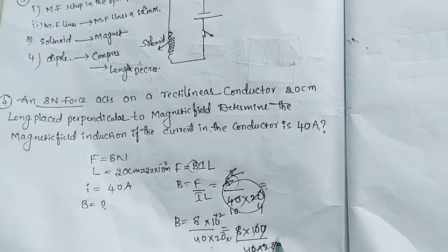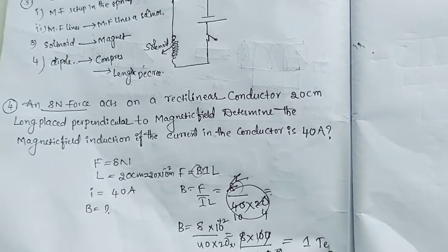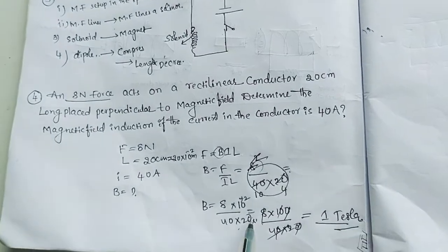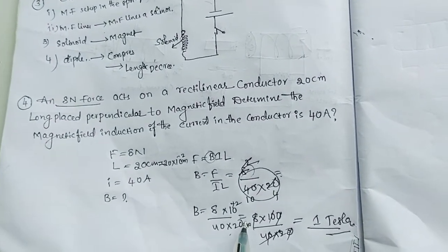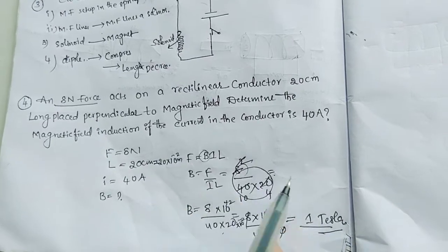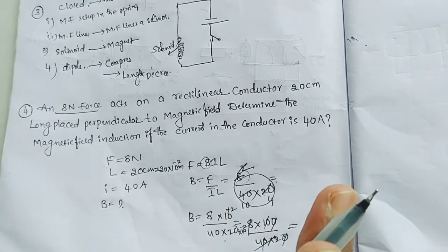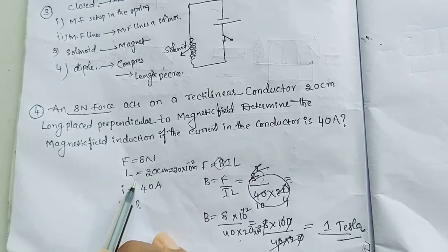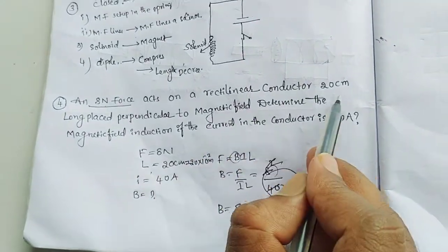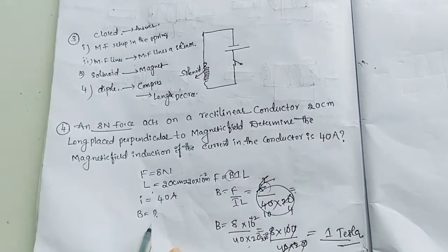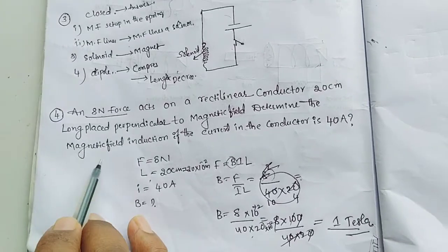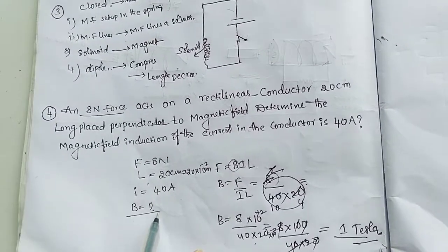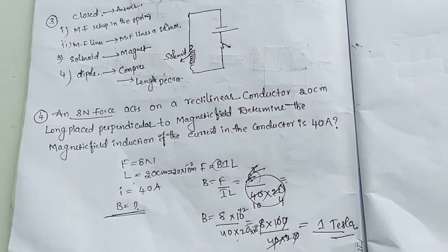So B is equal to 8 into 100, divided by 40 into 20, which simplifies to 1 Tesla. In summary: when force, length of the rectilinear conductor, and current are given, we can find the magnetic induction using B is equal to F divided by IL. Thank you.